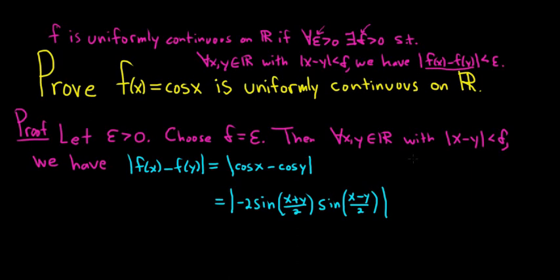Well, we're going to use two things. So one, recall that the absolute value of sine x is less than or equal to 1. At the same time, the absolute value of sine x is less than or equal to the absolute value of x. So we're going to use these two facts to finish the proof.